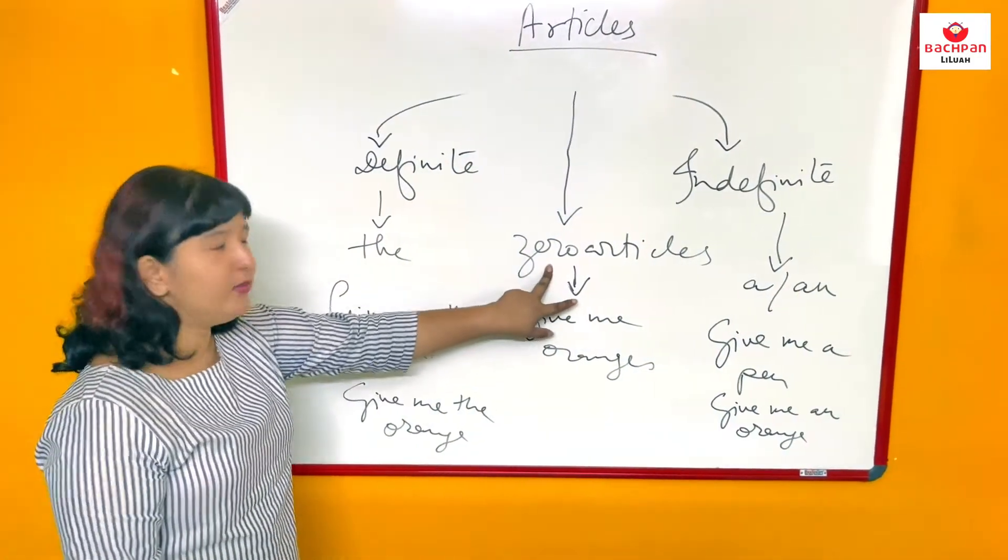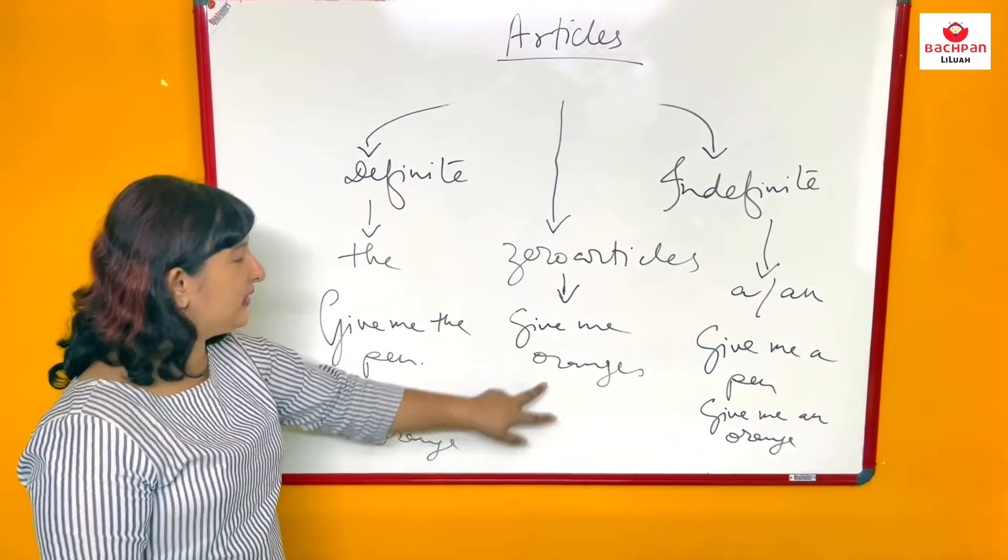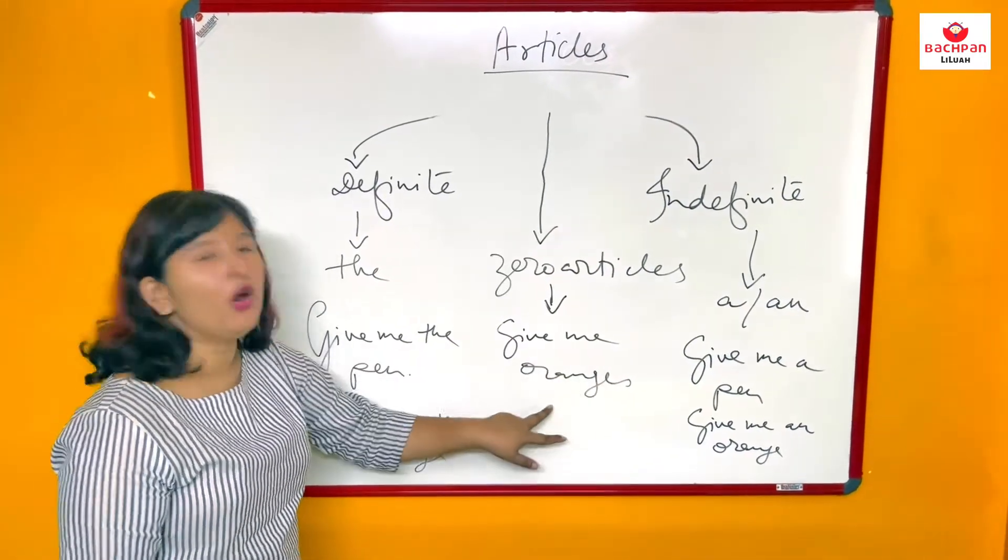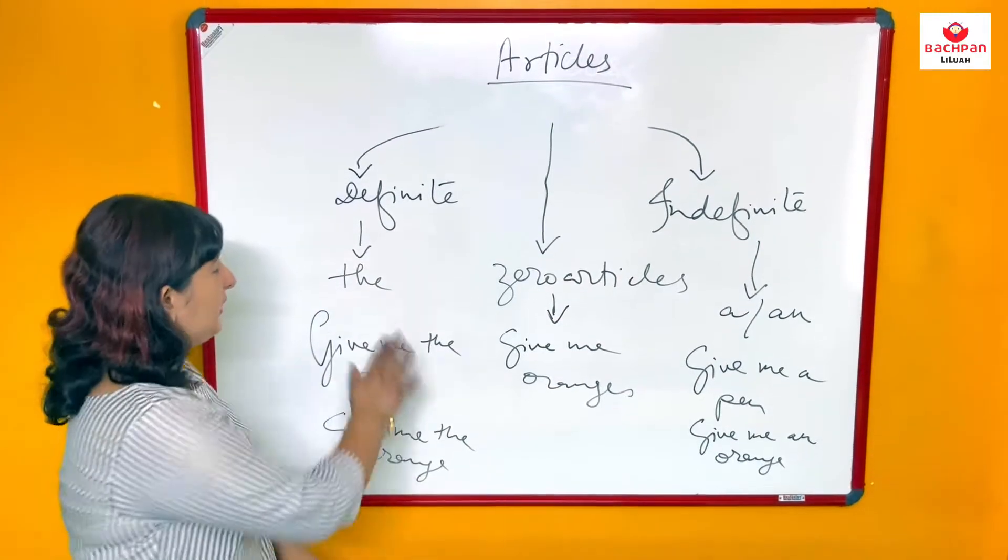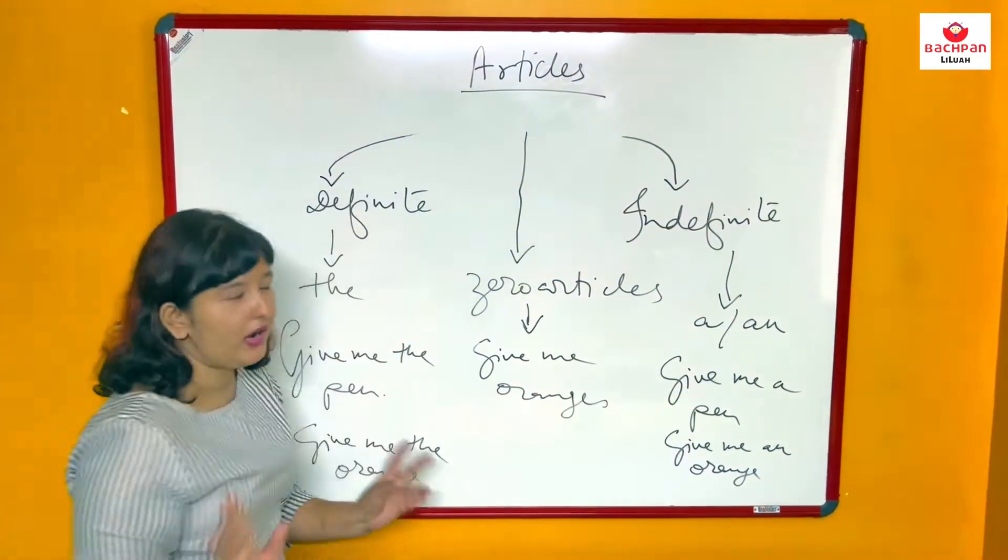So if I now come to the zero articles case, if I write give me oranges, give me oranges. Here I am not using any article. Neither I am using the, neither I am using a or an.